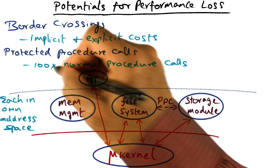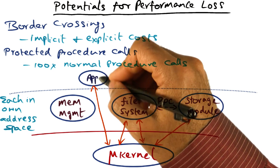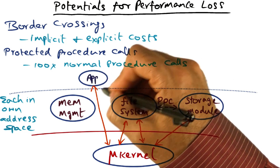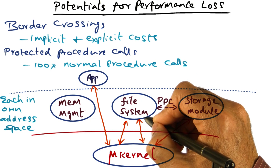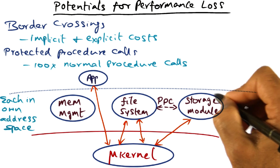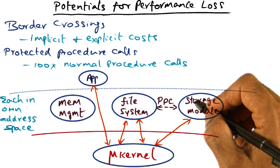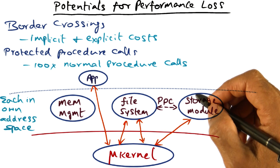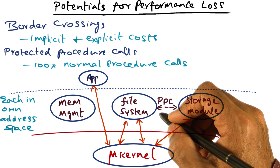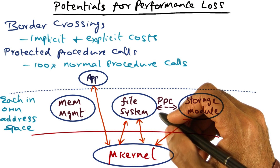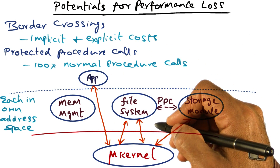Why are protected procedure calls that much more expensive than normal procedure calls? This is where the implicit cost of border crossing comes in — whether the border crossing happens when going from the user address space into the kernel address space, or between one hardware address space representing a particular system service to another. That implicit cost is the fact that we are losing locality, both in terms of address translations contained in the TLB, as well as the contents of the cache that the processor uses to access memory. All of those add up in making protected procedure calls or going between user space and kernel space that much more expensive.